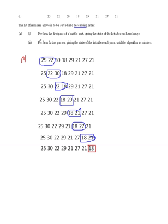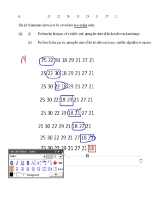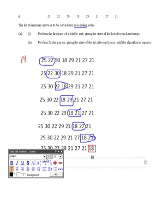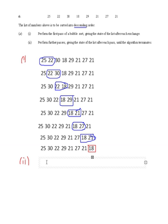Part two, perform further passes, giving the state of the list after each pass. It's quite easy to do just by writing it down. So as I'm going to go through, this is what happens on the second pass. As we go through, what I'm going to do is show what's happening at the end of each pass.